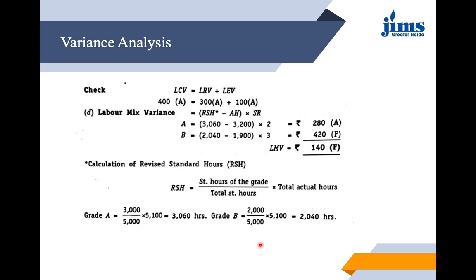We can add the two variances and verify they equal the labor cost variance. For labor mix variance, the formula is (Revised Standard Hours minus Actual Hours) into Standard Rate. The revised standard hours for each grade are calculated as: (Standard hours of the grade / Total standard hours) × Total actual hours, calculated separately for grades A and B. Applying this gives a favorable labor mix variance.